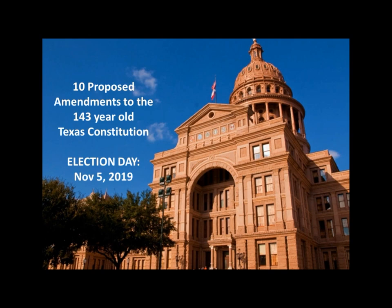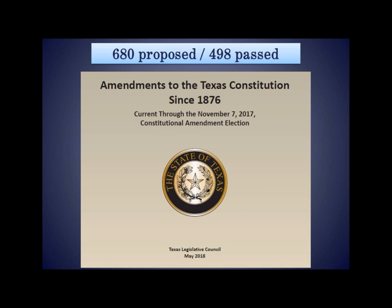The Texas Constitution is 143 years old. In early 1876, Texas voters approved the new Constitution by a margin of 2 to 1. Since its adoption in 1876, the legislature has proposed 680 amendments, of which 498 have been approved by the electorate and 179 have been defeated. Our legislature proposes amendments every odd-numbered year, and sometimes also in even-numbered years.